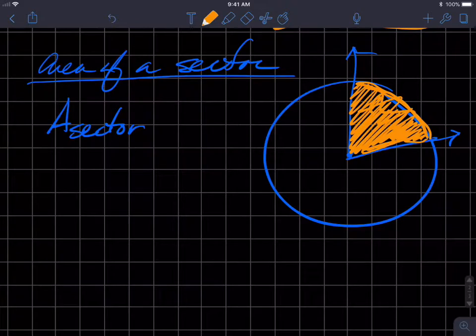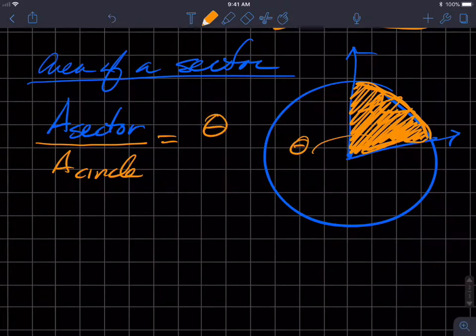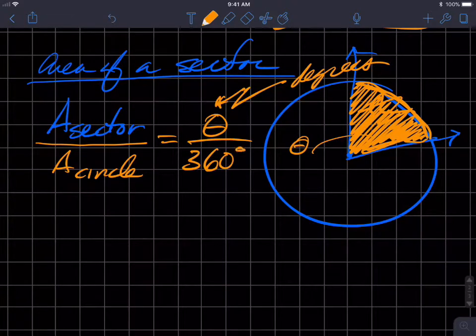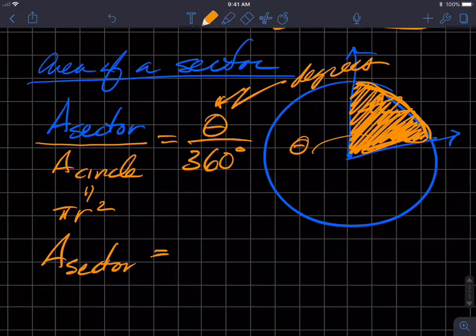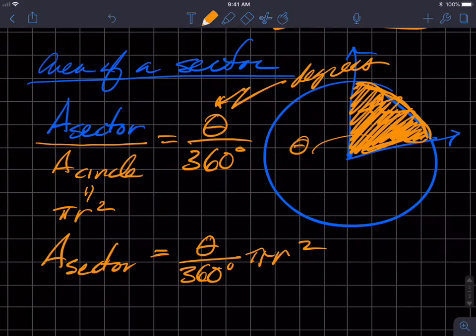We're going to deploy the same proportional methodology when we're using degree measure. So the area of a sector is some portion of the area of the whole circle, and that's equivalent to the measure of the central angle theta in degrees divided by all the way around the circle in degrees, which is 360. The area of the circle is pi r squared. So if I substitute that in and multiply both sides by pi r squared, I get the area of a sector equals theta, the central angle in degrees, divided by 360 degrees times the complete area of the circle, pi r squared.